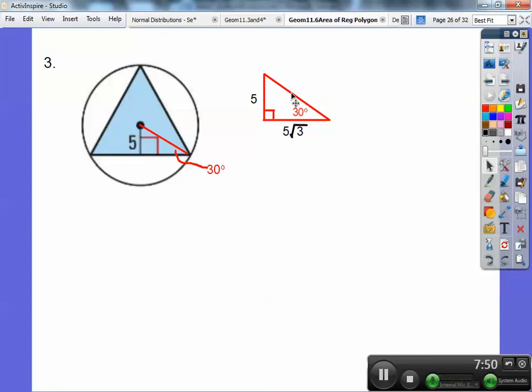So if that's 5 root 3, then the whole base is 10 root 3. So it's 5 root 3 here, 5 root 3. So 10 root 3 all the way around the house. So the perimeter is 3 times that or 30 root 3.